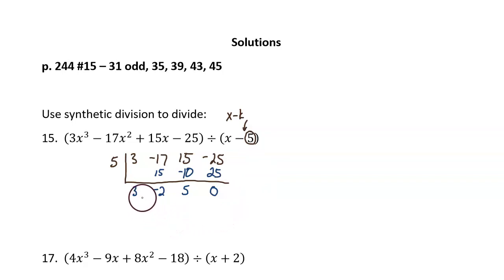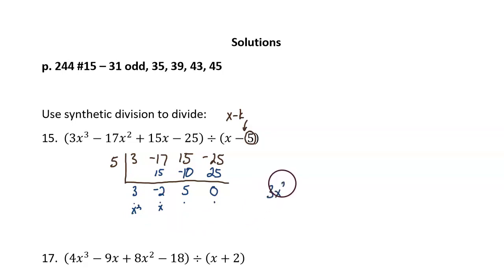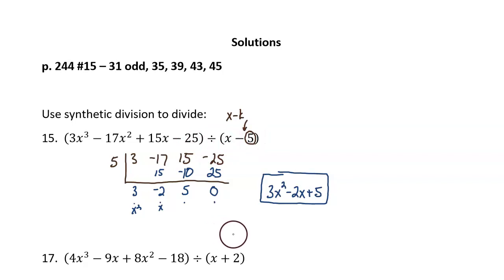Now we need to interpret this answer back into a polynomial format. This is the remainder. This is the constant term. This is the coefficient that goes with x. And this is the coefficient that goes with x squared. So the answer is 3x squared minus 2x plus 5. That's the answer to the division problem — when you divide this four-term polynomial by x minus 5, the quotient is this trinomial.